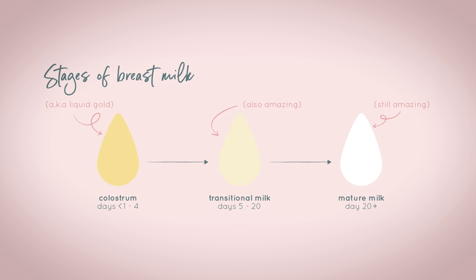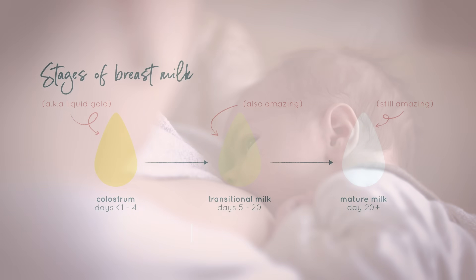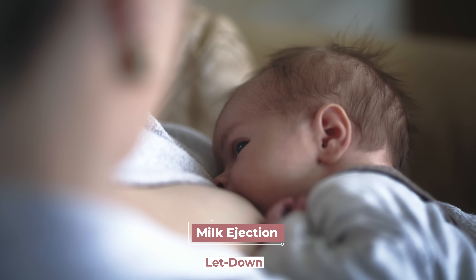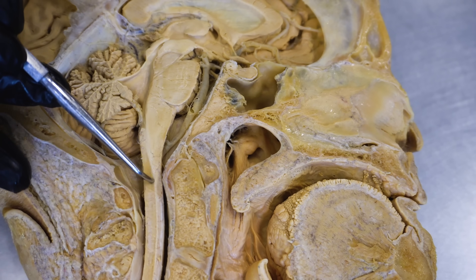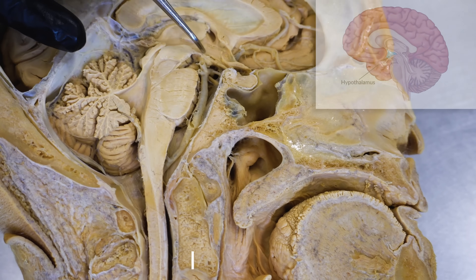Let's quickly talk about milk ejection, or what is often referred to as letdown — and this is pretty cool how this works. Milk is continuously being secreted within the alveoli of the mammary glands. When a baby first starts to suckle, the baby receives virtually no milk for the first 30 seconds or so. But then, sensory input from mother's nipples is transmitted through nerves to the spinal cord, and those signals move up the spinal cord to the hypothalamus.